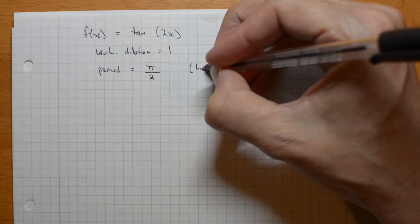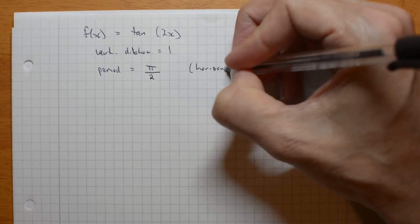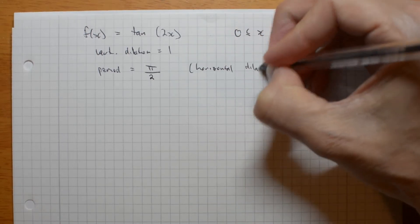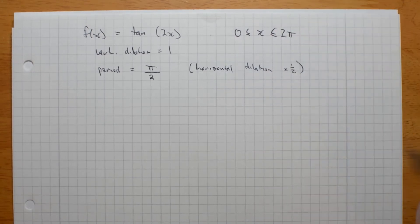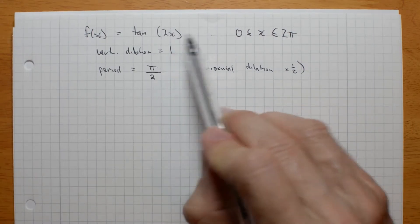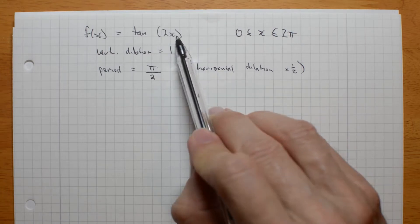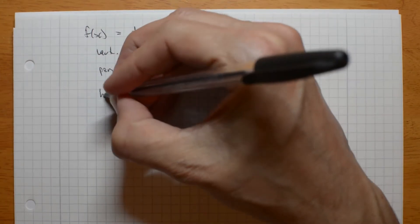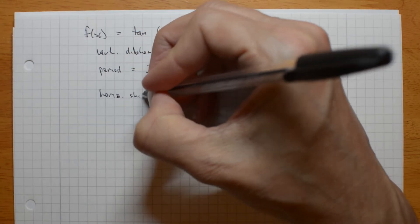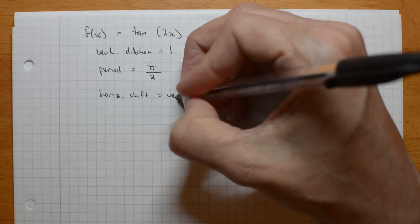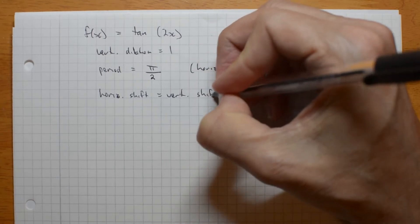If you prefer, this is horizontal dilation of a half. I've squashed it up to half its size horizontally. There is no horizontal shift and there is no vertical shift. They would be in here or out here. So, horizontal shift and vertical shift are both 0.